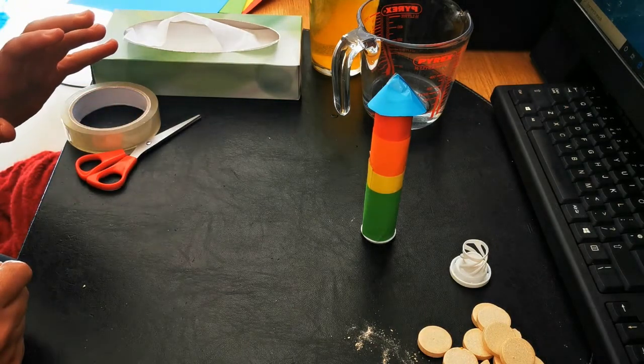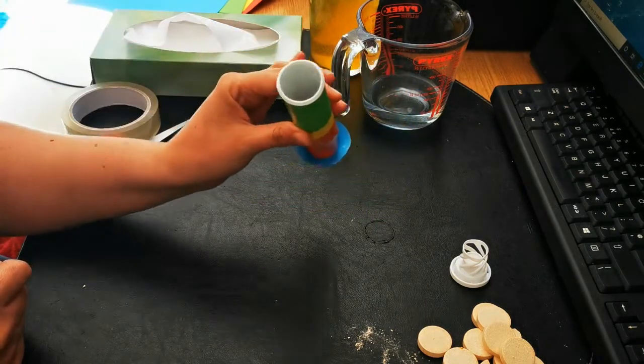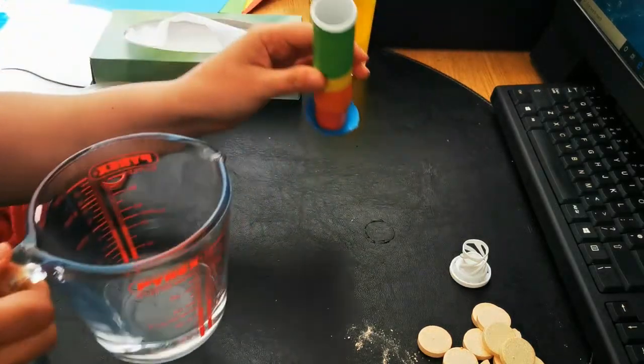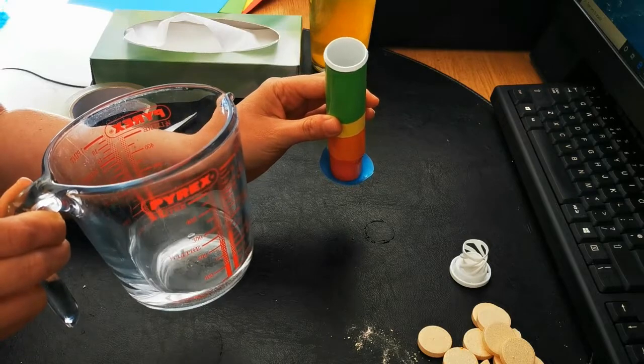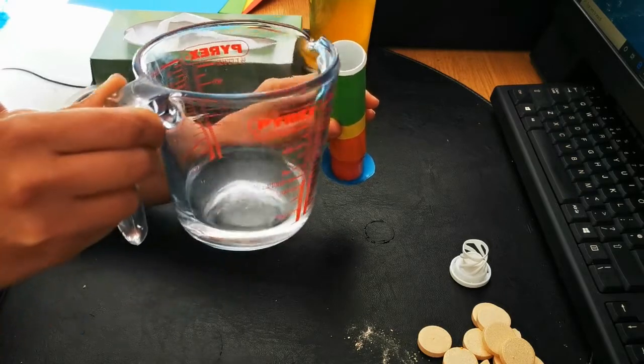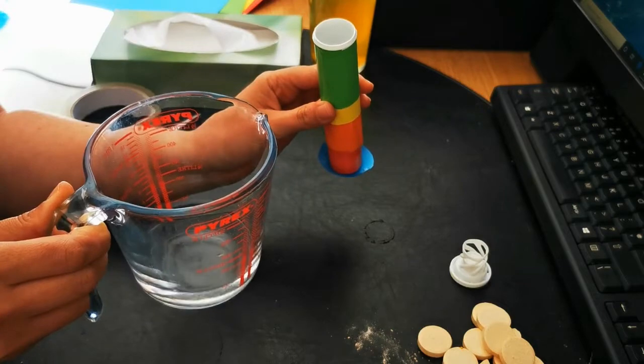The first step is to add the water into our rocket. So turn it up the other way and I'm going to add the water using this measuring jug. The reason I'm doing that is because it's going to make it easier to pour it into there without me spilling it and ruining my design.